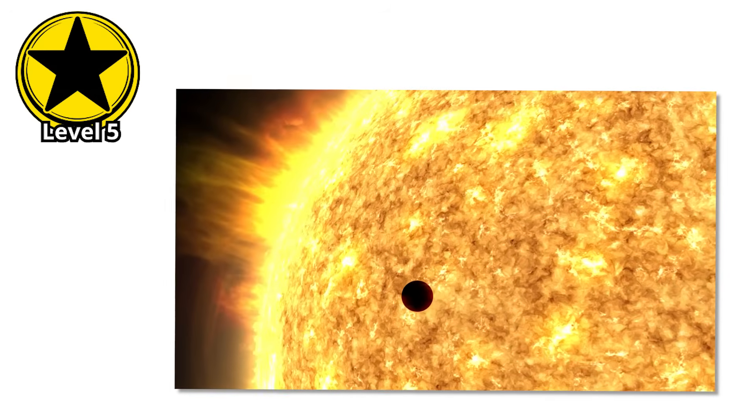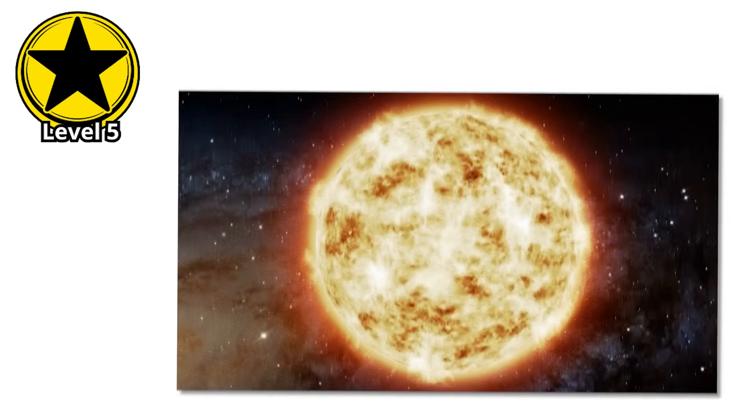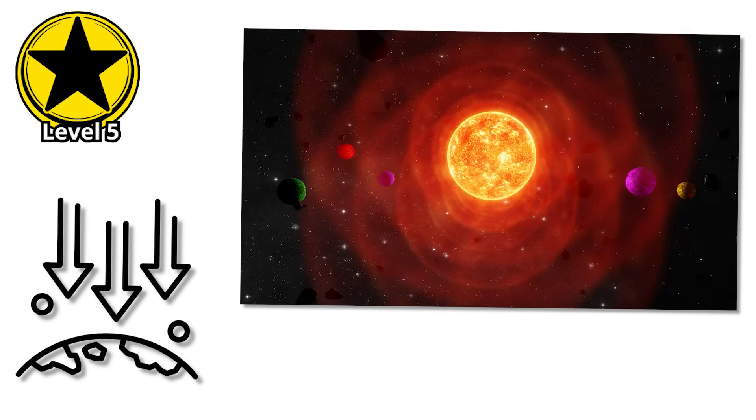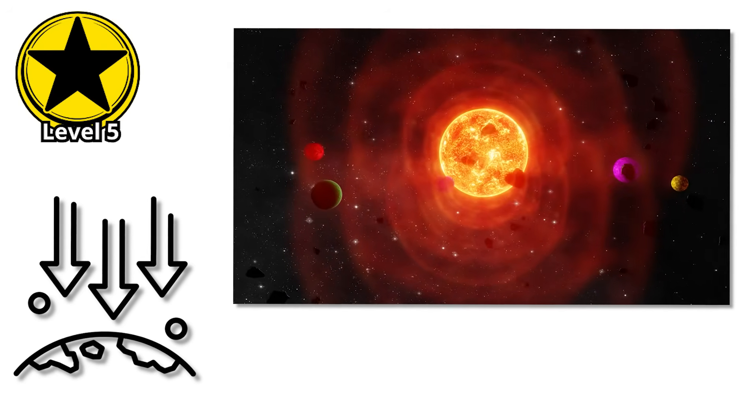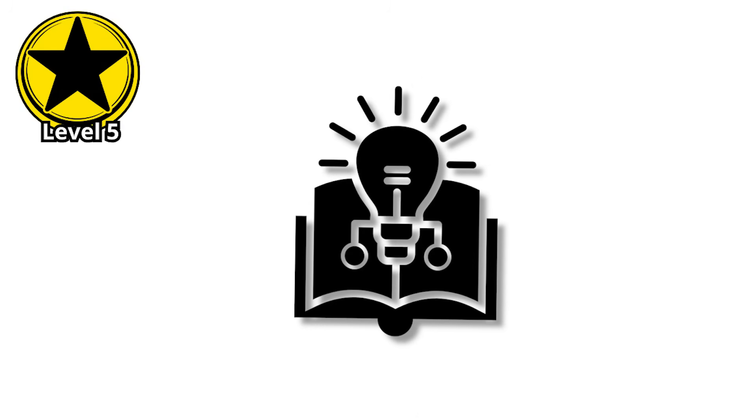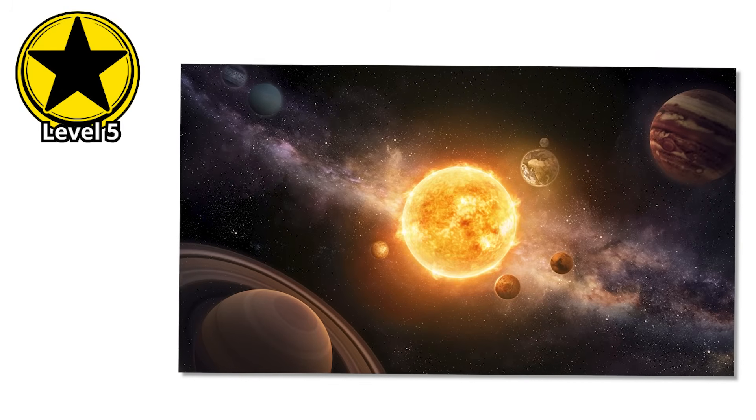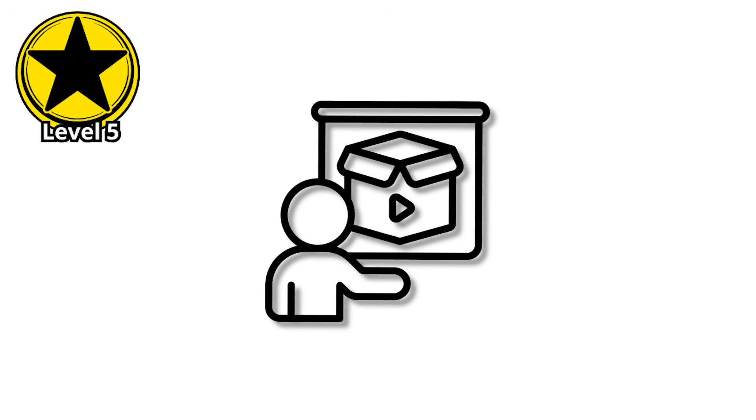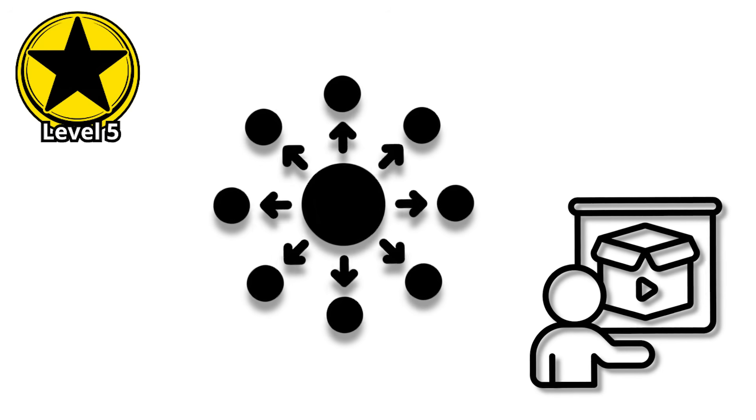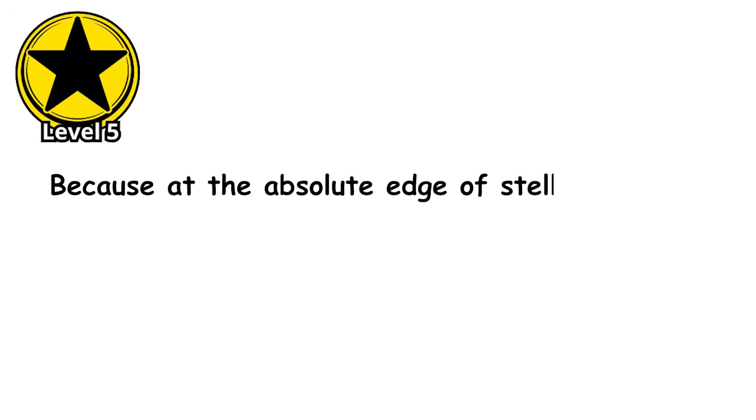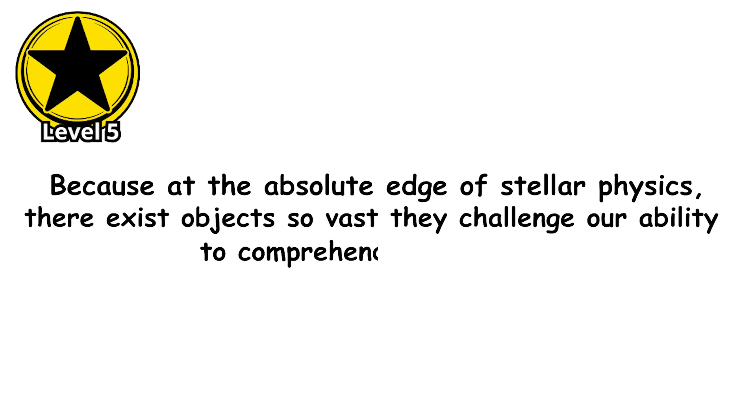Some of these stars can swallow entire solar systems, yet even they are not the largest the universe has managed to create. The surface gravity on these enormous stars is surprisingly weak. You could theoretically stand on the surface and weigh less than you do on Earth, despite being surrounded by a mass many times that of our sun. This counterintuitive fact demonstrates just how diffuse and tenuous these stellar giants actually are, because at the absolute edge of stellar physics, there exist objects so vast they challenge our ability to comprehend scale itself.